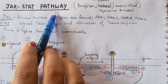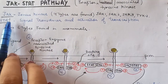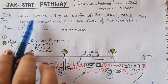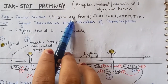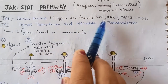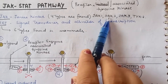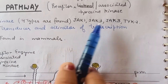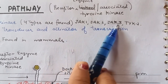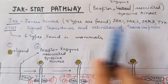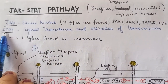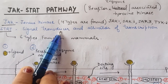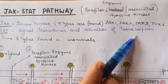The JAK-STAT pathway stands for Janus kinase. Janus kinase comes in four types: JAK1, JAK2, JAK3, and TYK2 — all of these are types of JAK. On the other hand, we have STAT, which stands for Signal Transducer and Activator of Transcription.